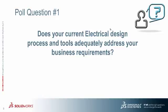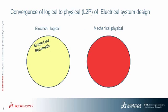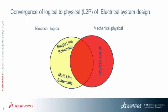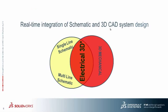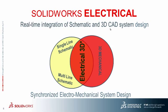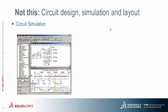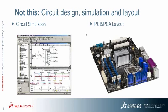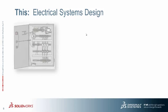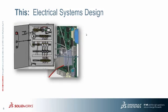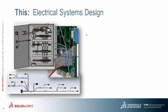We're going to talk about SolidWorks Electrical's unique capabilities. A key term is the convergence from logical to physical — taking the electrical logical and merging it with the mechanical physical, creating a new paradigm called Electrical 3D: real-time integration of schematic and 3D CAD system design. SolidWorks Electrical is not circuit design, circuit simulation, or PCB layout. It is electrical system design allowing for cabinet design, advanced electrical interconnect design, and harness development, in addition to single-line schematics, multi-line schematics, power and logic schematics, and PLC logic.